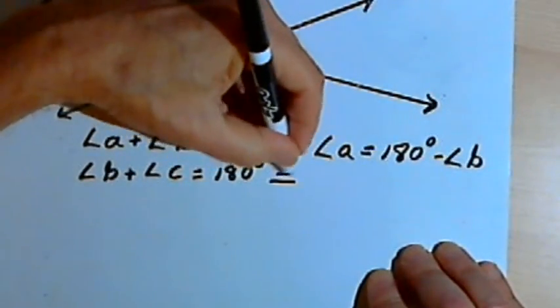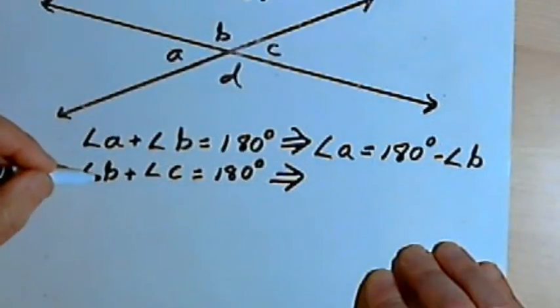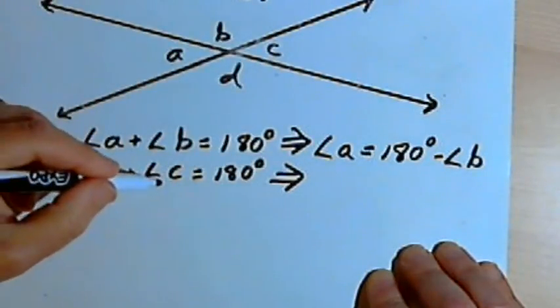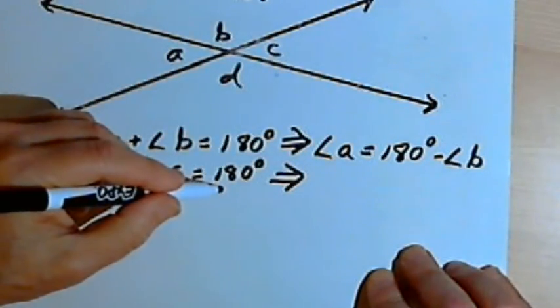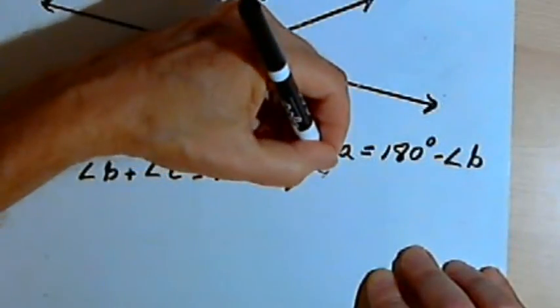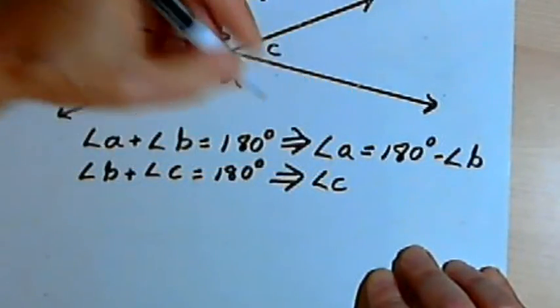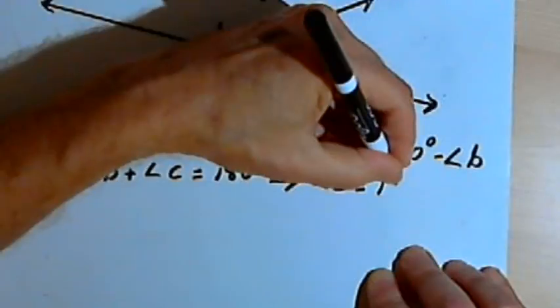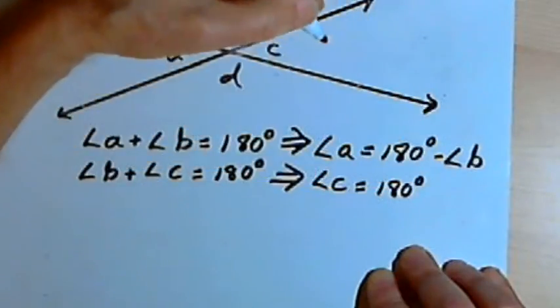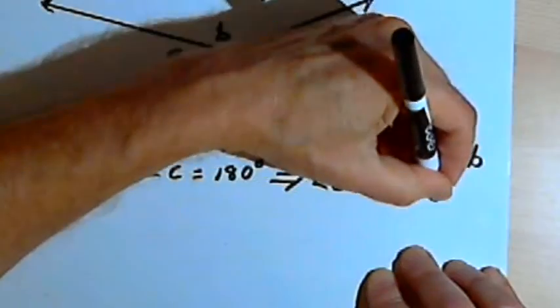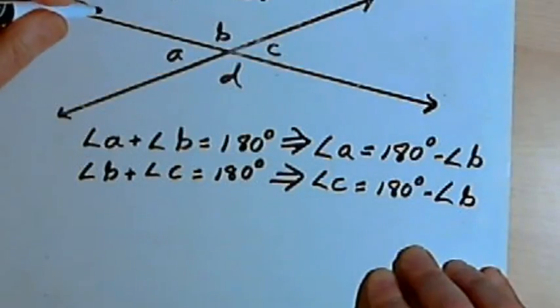And the second equation, angle B plus angle C equals 180 degrees, is going to become angle C equals 180 degrees minus angle B.